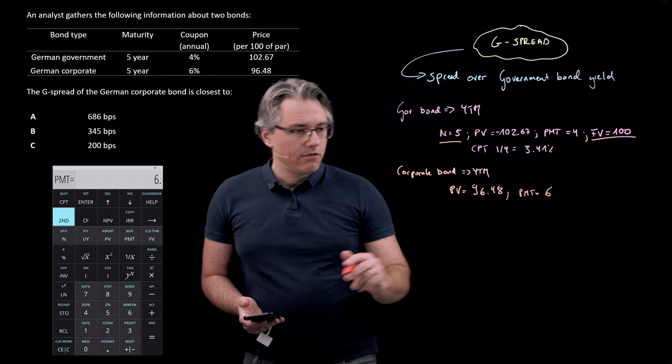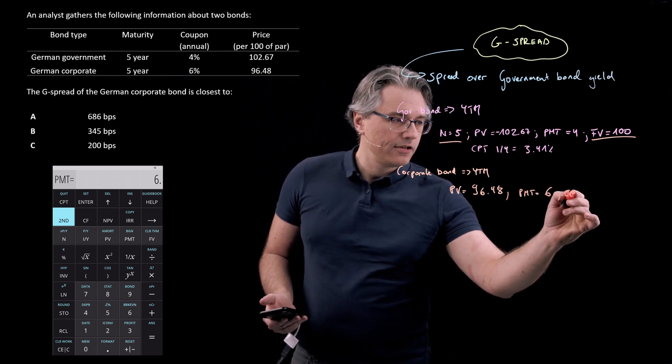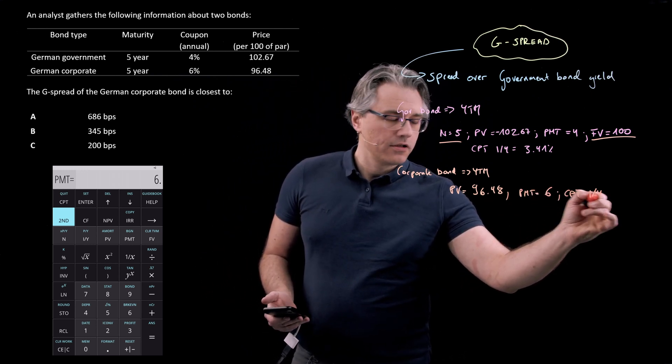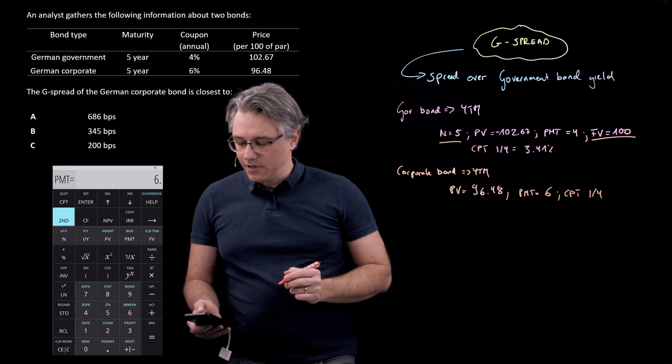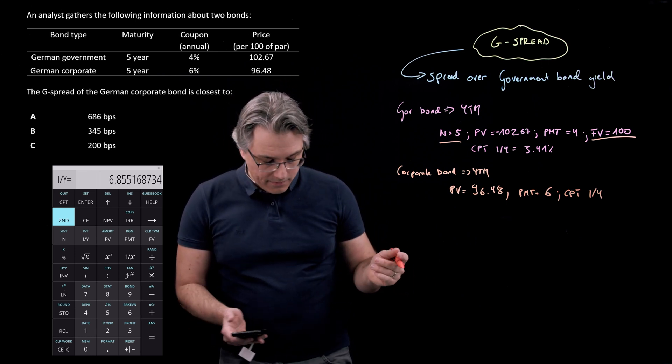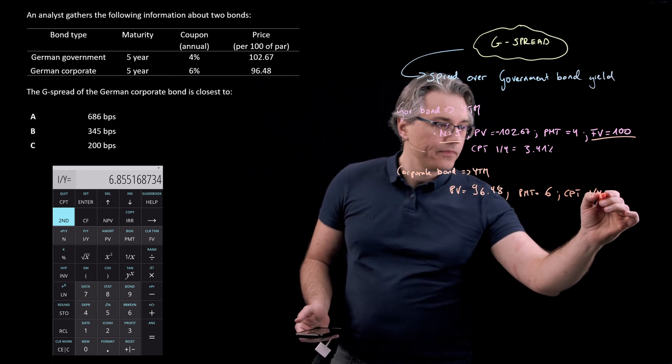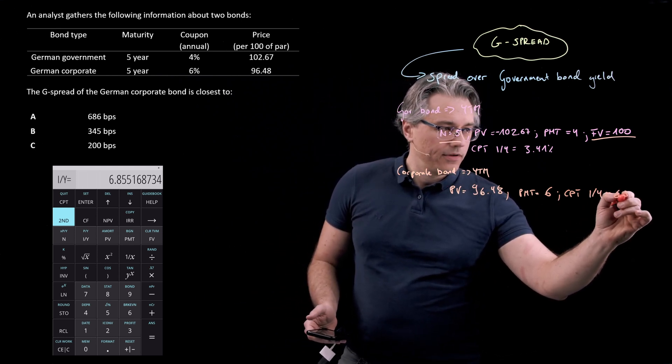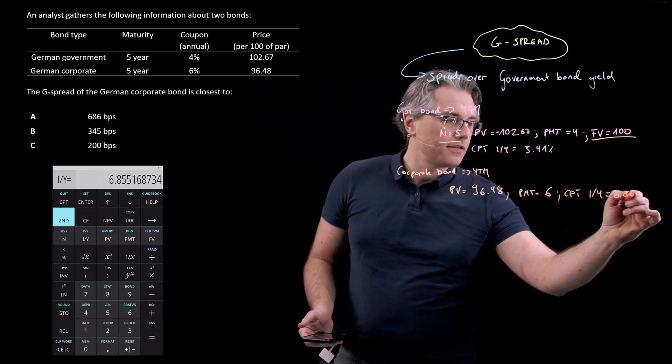Everything else is the same. So I can now ask my calculator to do the computation of yield compute CPT I over Y. And my calculator is telling me it's 6.86%. Good.